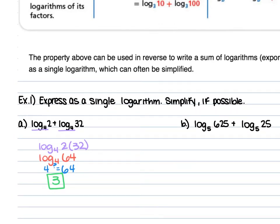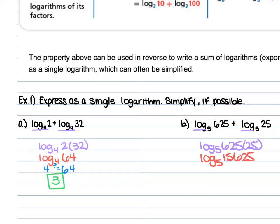For b, we have log₅ of 625 plus log₅ of 25. Our bases are the same, so keep the log₅ and multiply 625 times 25. That gives us log₅ of 15,625. Think: 5 to what power is 15,625? I don't expect you to know this off the top of your head, but 5 to the 6th power is 15,625, so 6 is our answer.